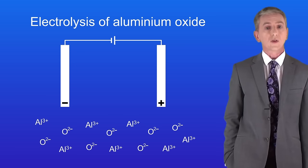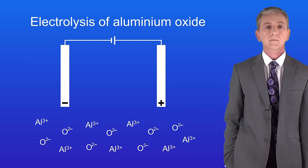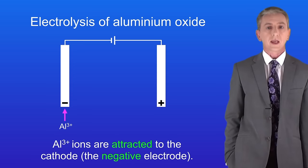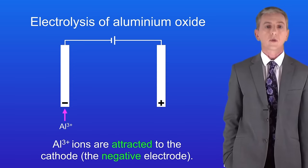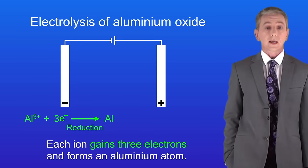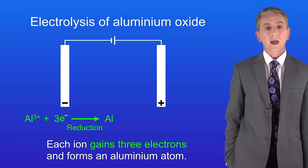Here are the aluminium ions Al3+ and the oxide ions O2-. These ions are free to move because this is molten aluminium oxide and remember that the word molten means melted. The aluminium ions Al3+ are attracted to the cathode which is the negative electrode. Here each ion gains three electrons and forms an aluminium atom.